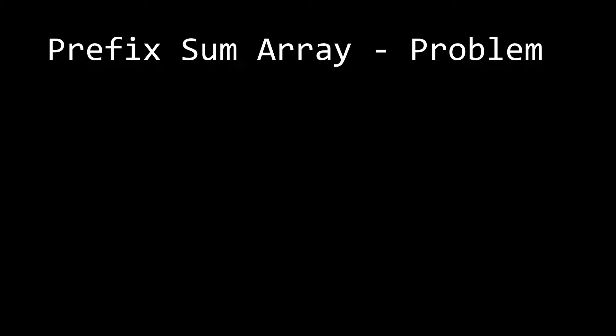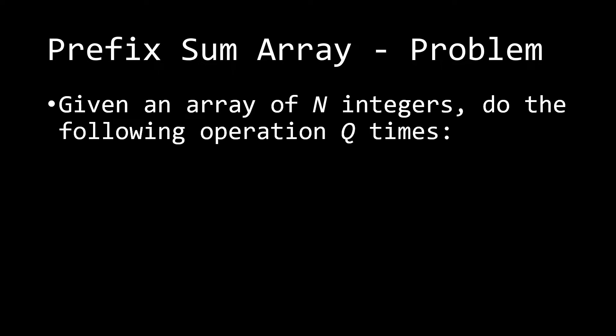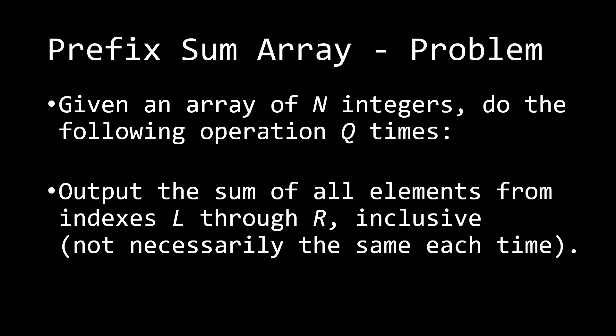We're given an array of n integers and we want to do the following operation Q times: output the sum of all elements from indexes L through R inclusive, but not necessarily the same each time. We might take the range from 1 to 3, then 2 to 6, for example, and so on.